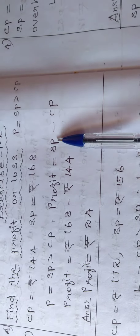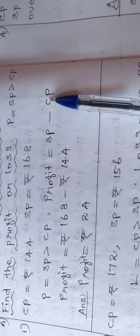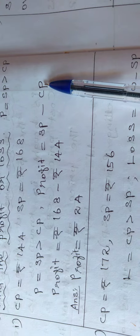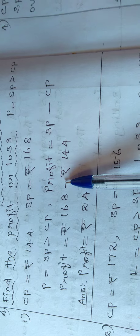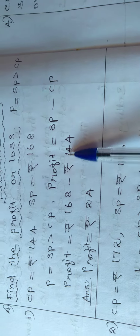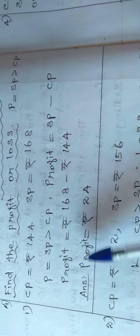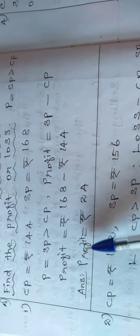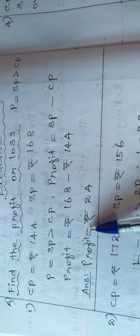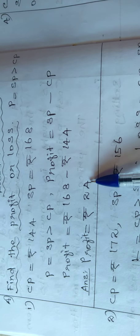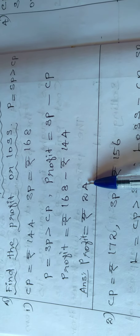Profit is equal to SP minus CP. Profit is equal to rupees 168 minus rupees 144. The answer is profit is equal to rupees 24. Thank you.